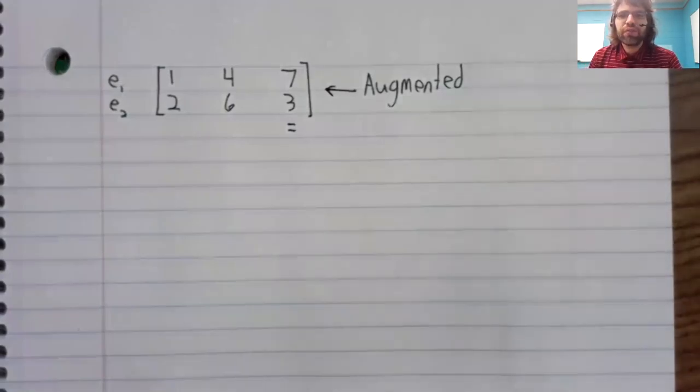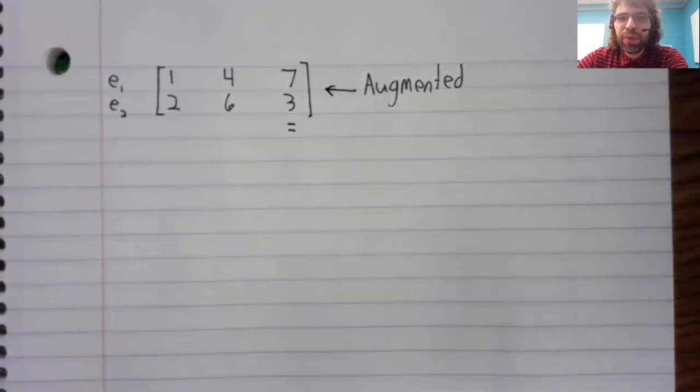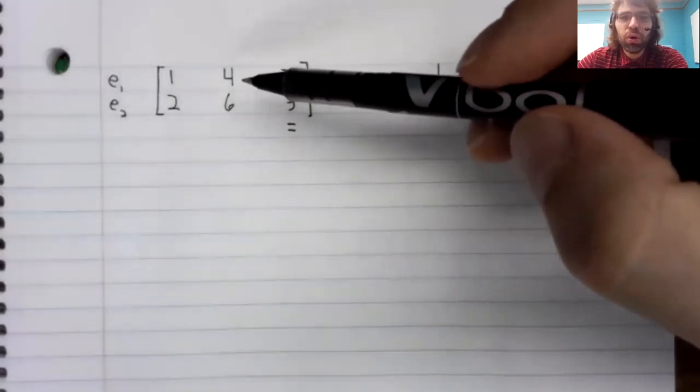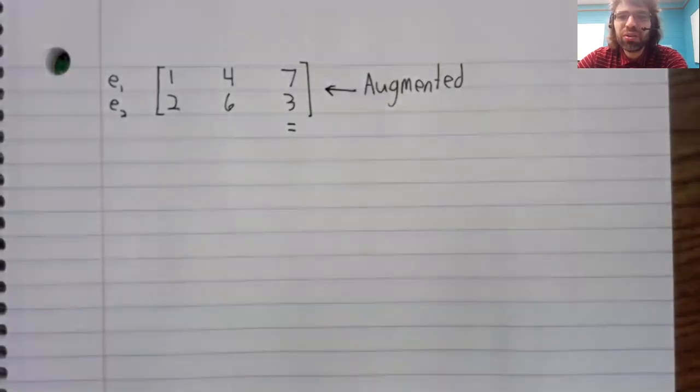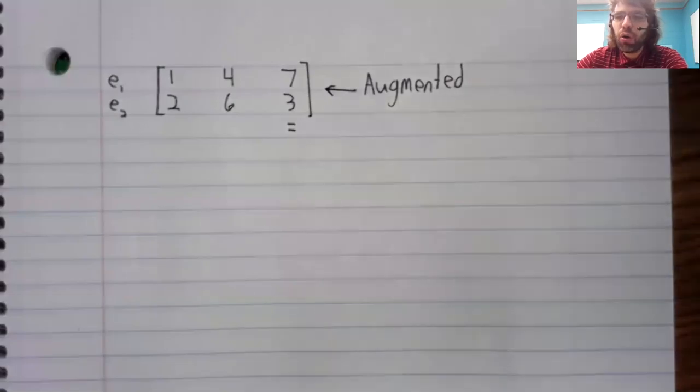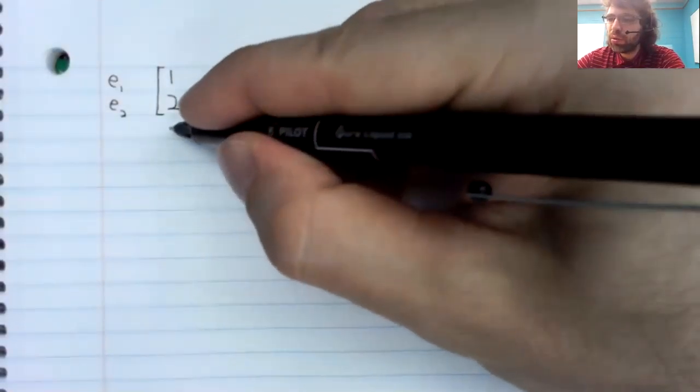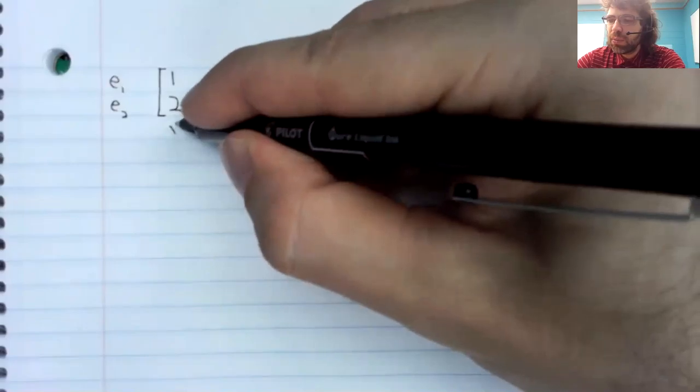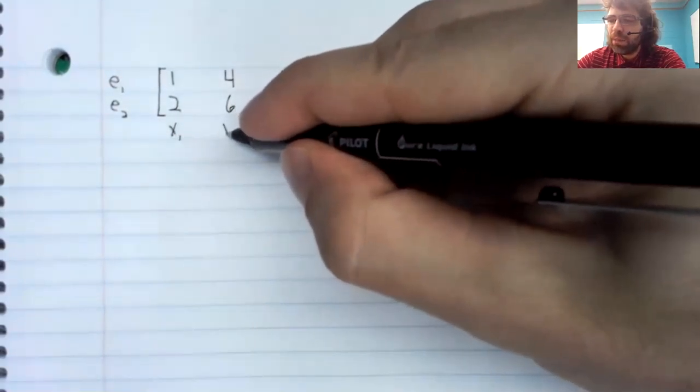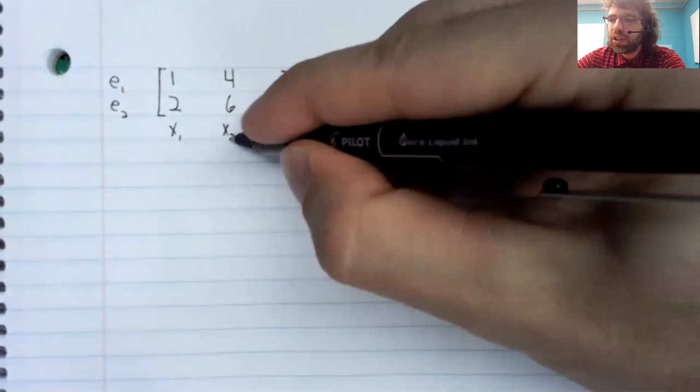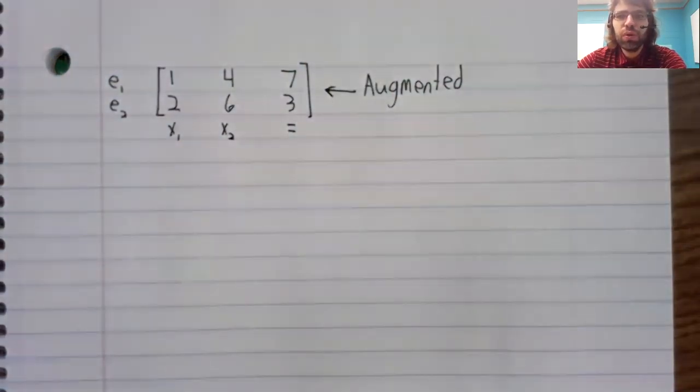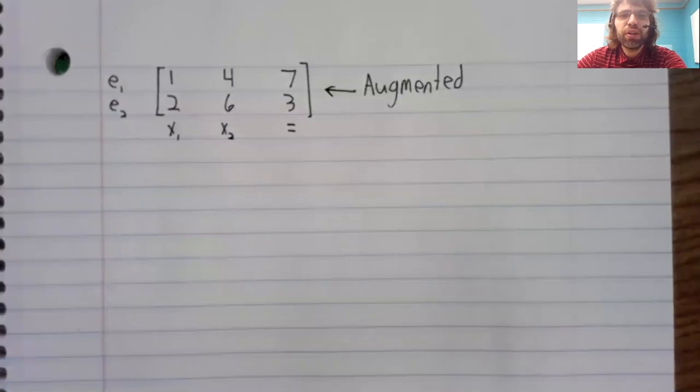Now we have to make a choice. It's not an important choice, but the only piece of information not stored in this matrix is what to call our variables. Whether they're x and y, or x1 and x2, or something else. Let's go with x1 and x2.